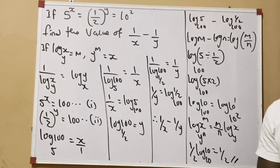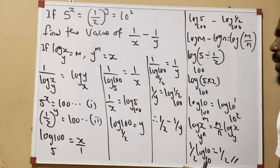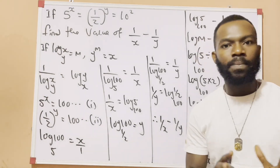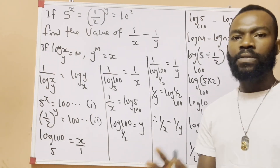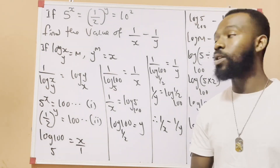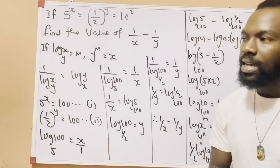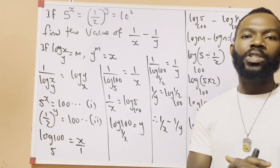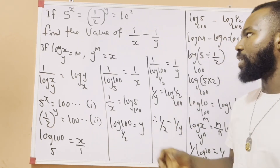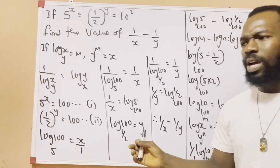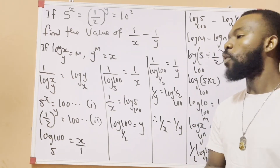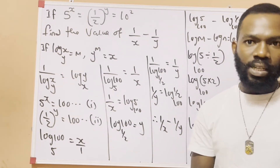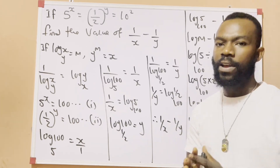So class, this is how we get the answer for 1 over x minus 1 over y, which equals 1 over 2. I believe you understood perfectly. If there is a place you did not get, you can see the link in the comment section. If you understood, please help us share so other students can learn. We are done with today's class — thank you for watching and we'll meet again in the next video.